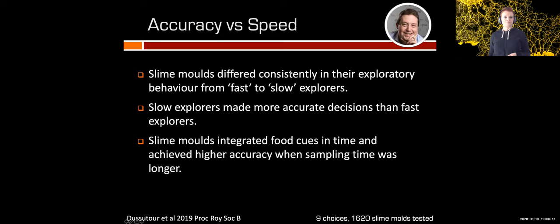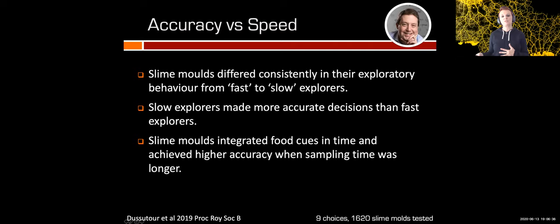We were able to show that slime molds differ consistently in exploratory behavior, from fast to slow explorers. We now have 10 strains in the lab, giving a continuum in speed, and we are still investigating the question of speed versus accuracy. Slow explorers made more accurate decisions than fast explorers, and slime molds integrated food cues over time, achieving higher accuracy when sampling time was longer. The Australian slime mold is more informed than the Japanese because it spends more time integrating information from its environment.